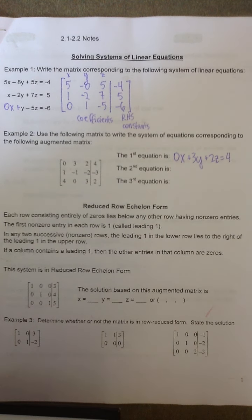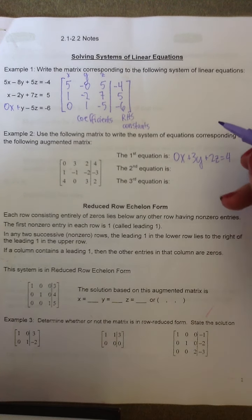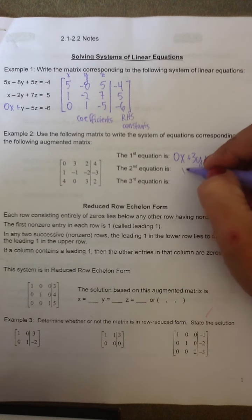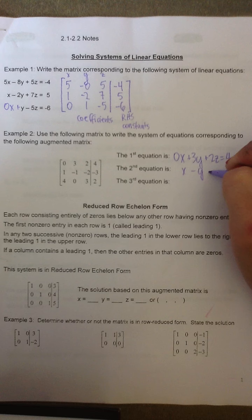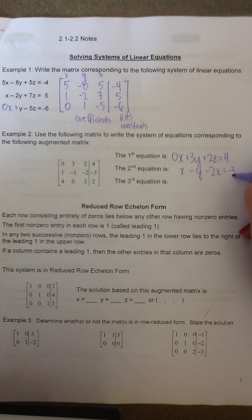Or technically, I wouldn't have to write that 0x. The second equation corresponding to the second row of the matrix is x minus y minus 2z equals negative 3.